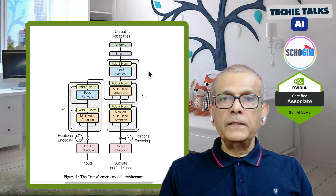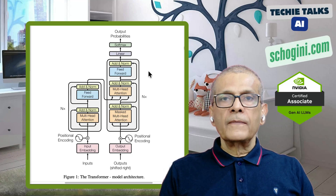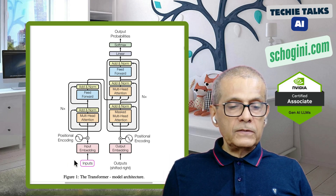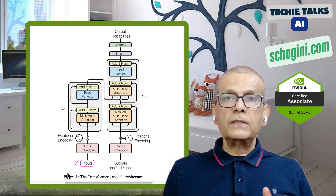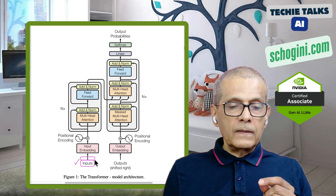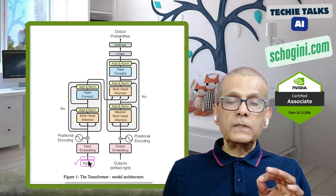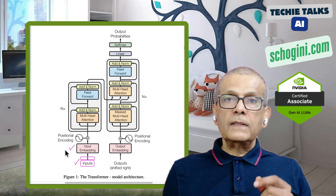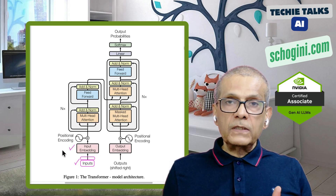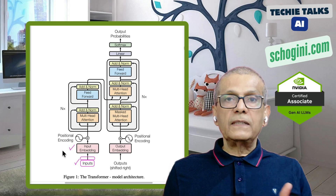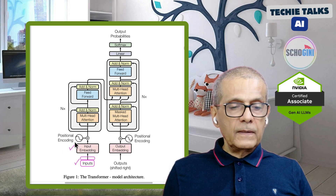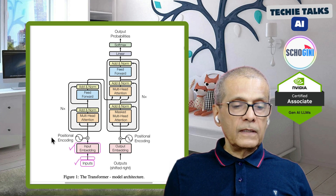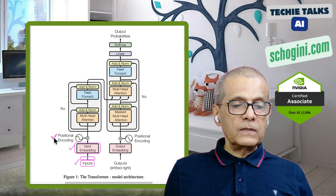Welcome to the third video in Understanding Transformers. This is Sri from Pecky Talks AI. In the first video, we saw how input text gets converted to subwords, then those subwords get converted to tokens. In the second video, we saw how these tokens get converted to meaningful vectors called embeddings. Welcome to the third video where we are going to understand positional encoding.